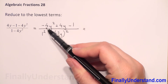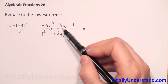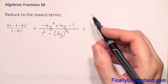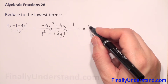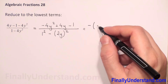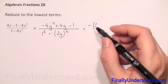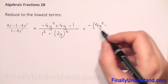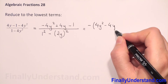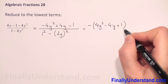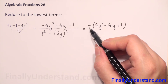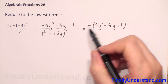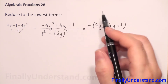We have negative 4y squared plus 4y and negative 1. If we factor out the negative sign, we will have in parenthesis 4y squared minus 4y plus 1. If we multiply by negative 1 every expression in parenthesis, we will get back the same expression we had at the beginning.